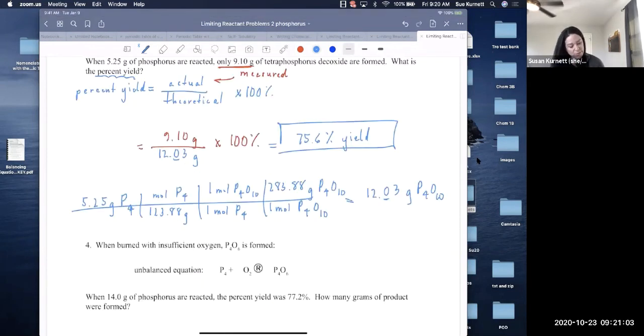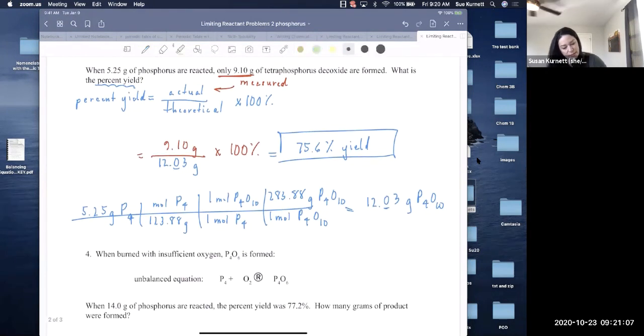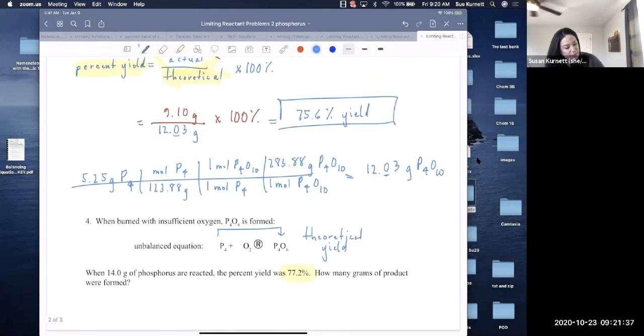Okay, so here we're using percent yield from a different direction. Now we're given 14 grams of phosphorus are reacted, and from the reacted we're going to get to the theoretical yield. Then we're told what the percent yield is. So we're starting with a number on the left, then theoretical, and what we're solving for is the actual. So as soon as I see percent yield, I start setting it up like this in my mind: actual, theoretical, 100%, percent yield. And I see, oh, I know this number, it's 77.2%. I can figure out this number by going from grams to moles to moles to grams. What I'm solving for is the numerator here.